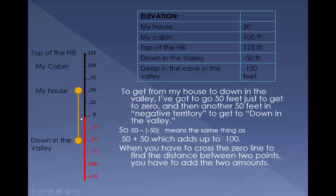When you have to cross the zero line to find the distance between two points, you have to add the two amounts.